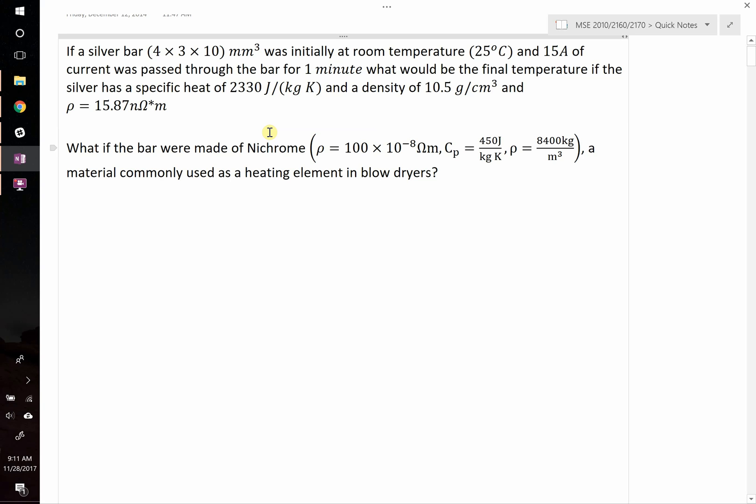Okay, for this problem we're asked the following. If a silver bar with dimensions 4 mm by 3 mm by 10 mm is initially at room temperature, and we pass 15 amps of current through the bar for one minute, what would be the final temperature of the silver if we're given the specific heat, the density, and the electrical resistivity?